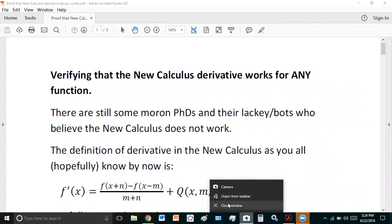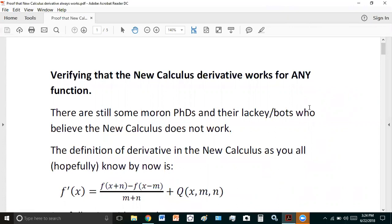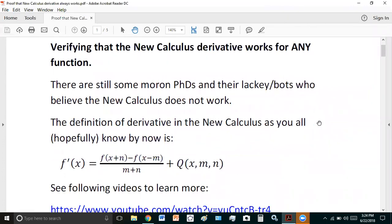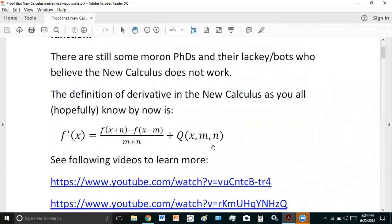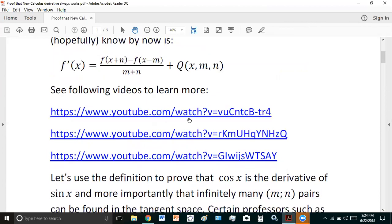Just let me close this window. Okay. And the definition of derivative in the new calculus, as you'll hopefully know by now, is f prime of x is equal to this expression here, plus of course the auxiliary expression which is always evaluated to zero. And you can watch some of the previous videos to see how that's done.